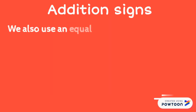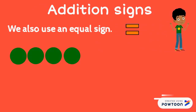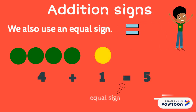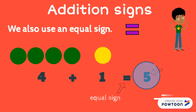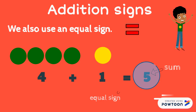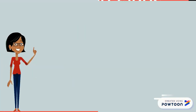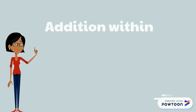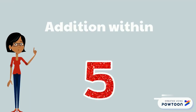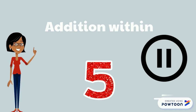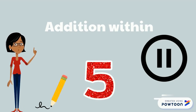In addition, we also use the equal sign. It helps us show the total. The last number of the equation is called the sum and that's the total. And now you will see some equations of adding within five. You can pause the video at any moment to practice the answers of each equation.